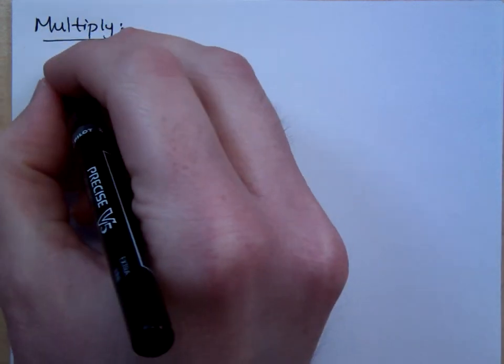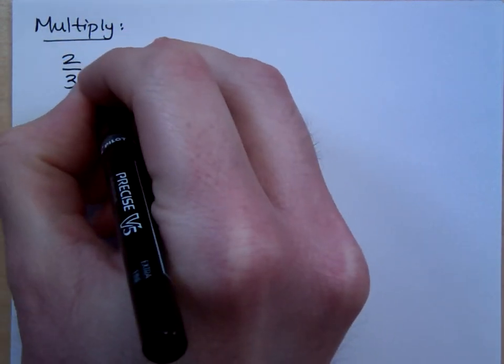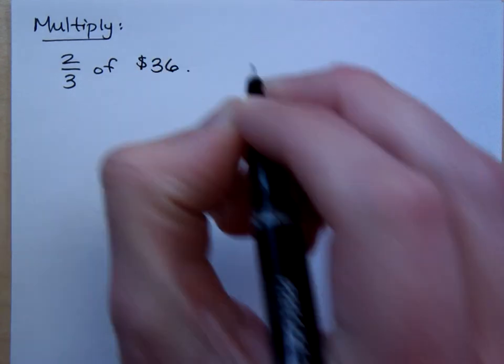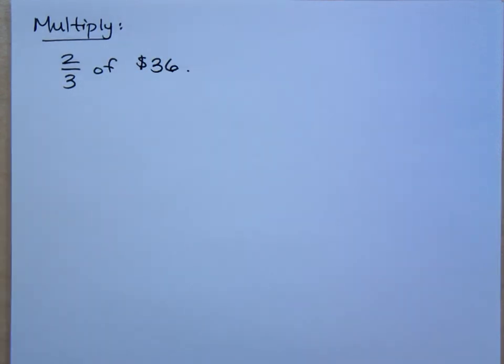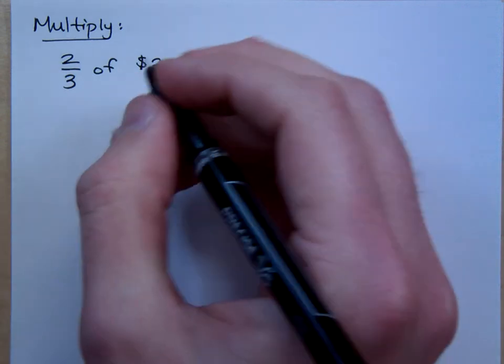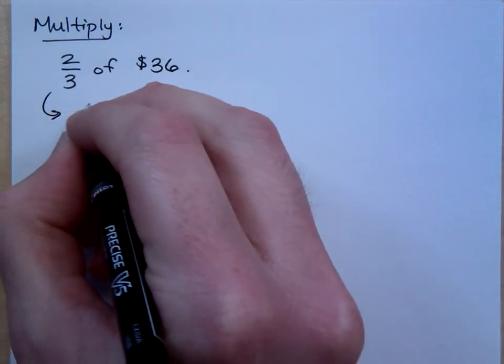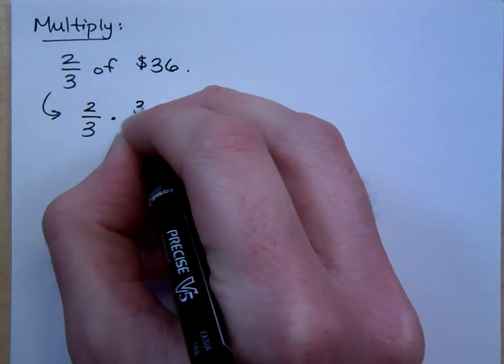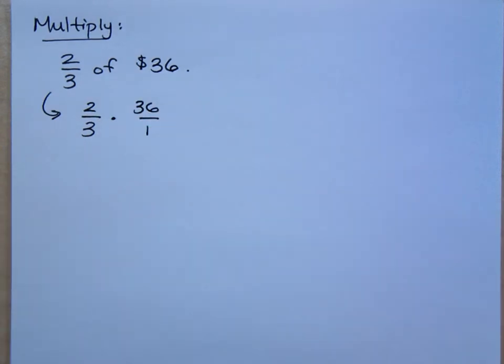More fun with multiplication. If I say two-thirds of $36, what does this mean? It still means multiplication, so this means two-thirds times 36 over 1.